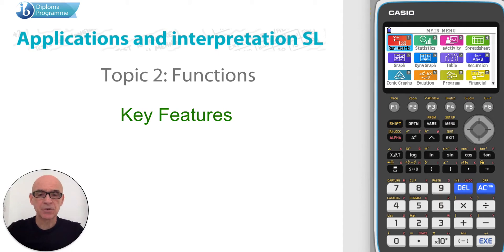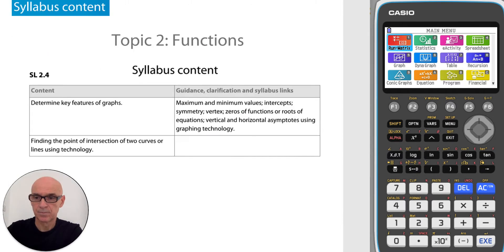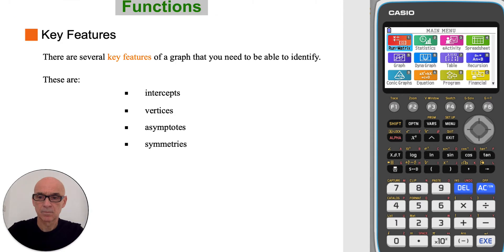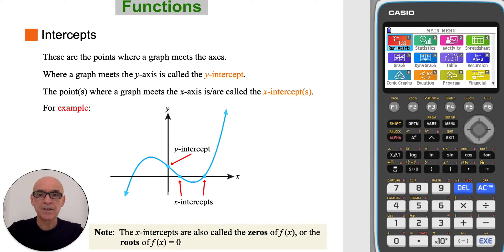This video is on functions, specifically on the key features of a graph of a function. In the syllabus there are several key features of a graph that you need to be able to identify. These are the intercepts, the vertices, the asymptotes, and the symmetries.